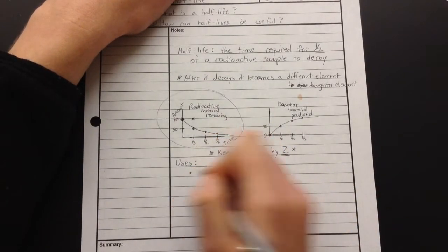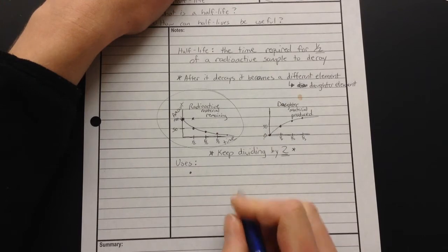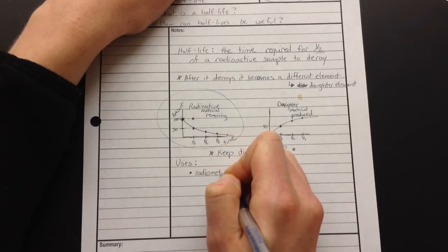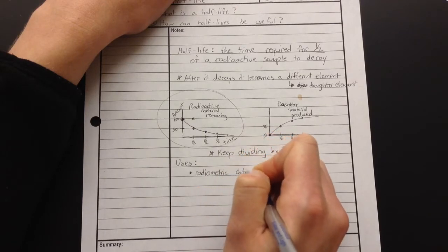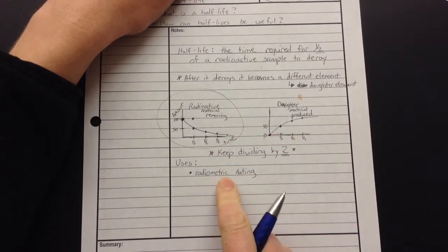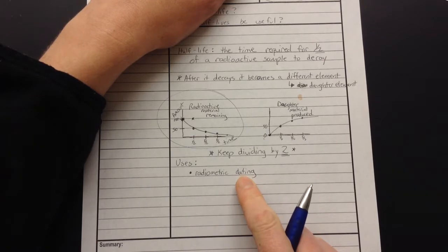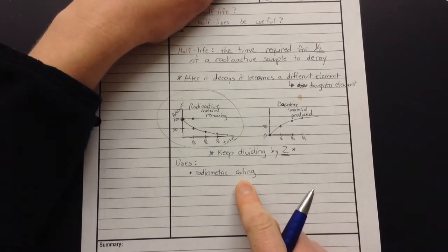So let's talk about those uses. A good use, the first use I want to talk about is called radiometric dating, and there's a bunch of different words. It might be radioactive dating. It might be radioisotopic dating. Either way, we're using radioactive materials to figure out how old something is. That's what I mean when we say dating.